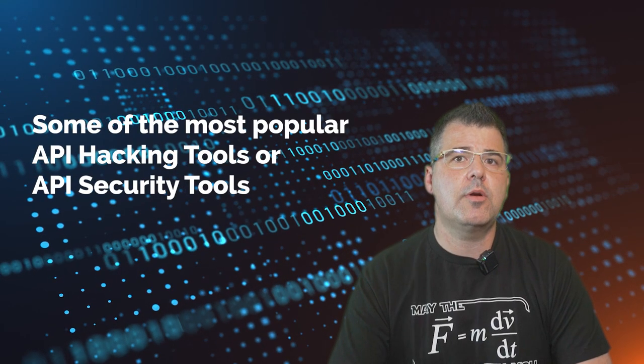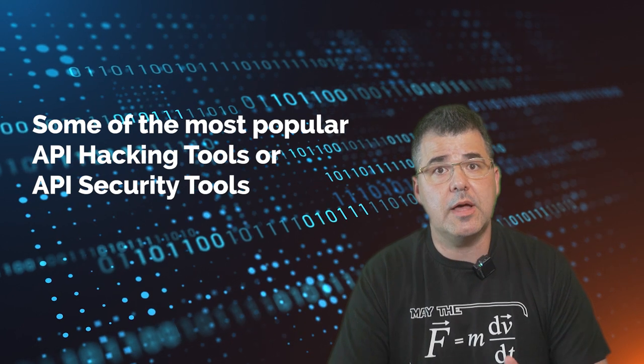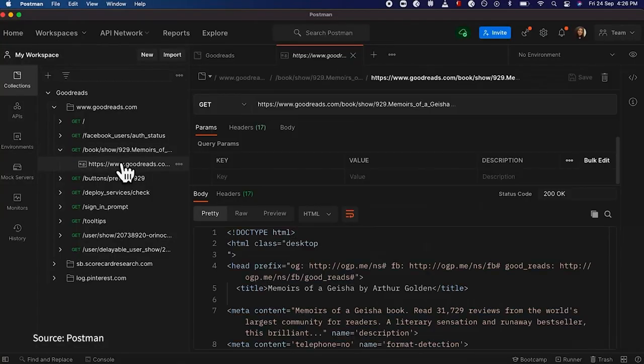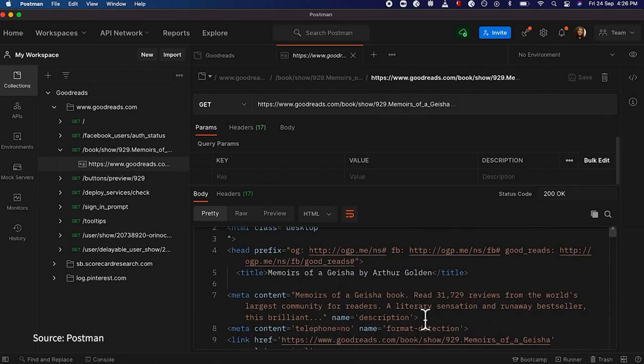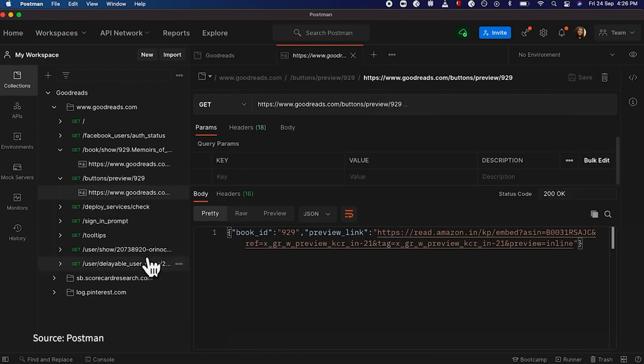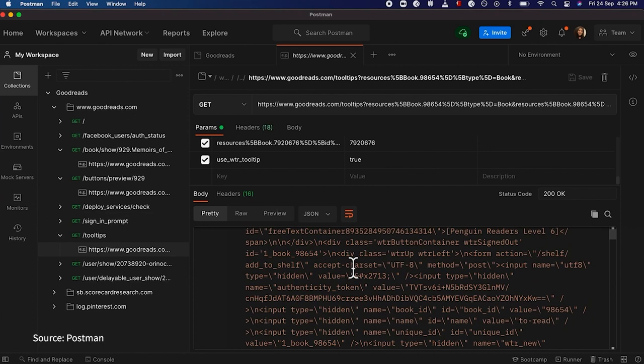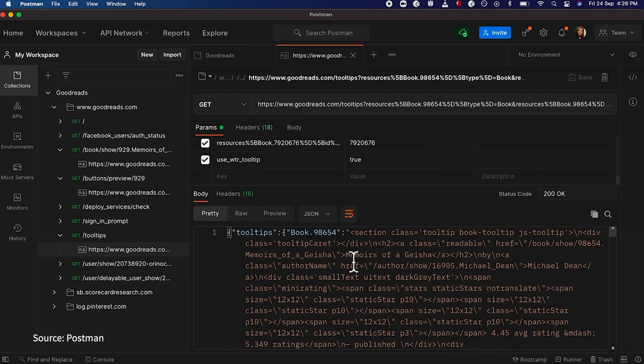Some of the most popular API hacking tools or API security tools. So let's deep dive into some of these tools. First, Postman. Postman offers enterprise-class support, security, reliability, and uptime. It can proxy traffic to various scanners and offers complete API security testing coverage. It is open-source friendly and supports multiple protocols like gRPC, WebSockets, and Socket.io.